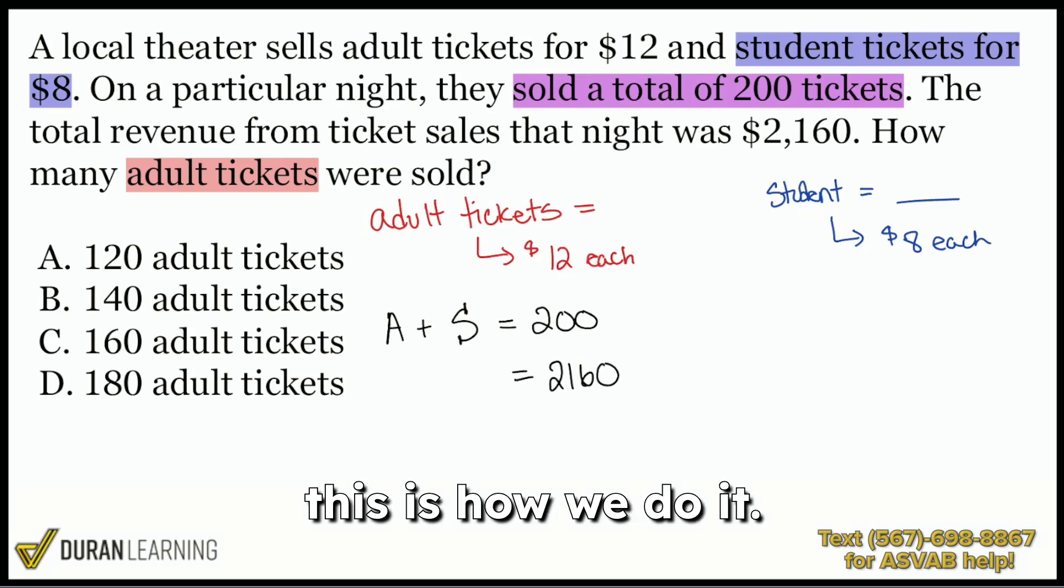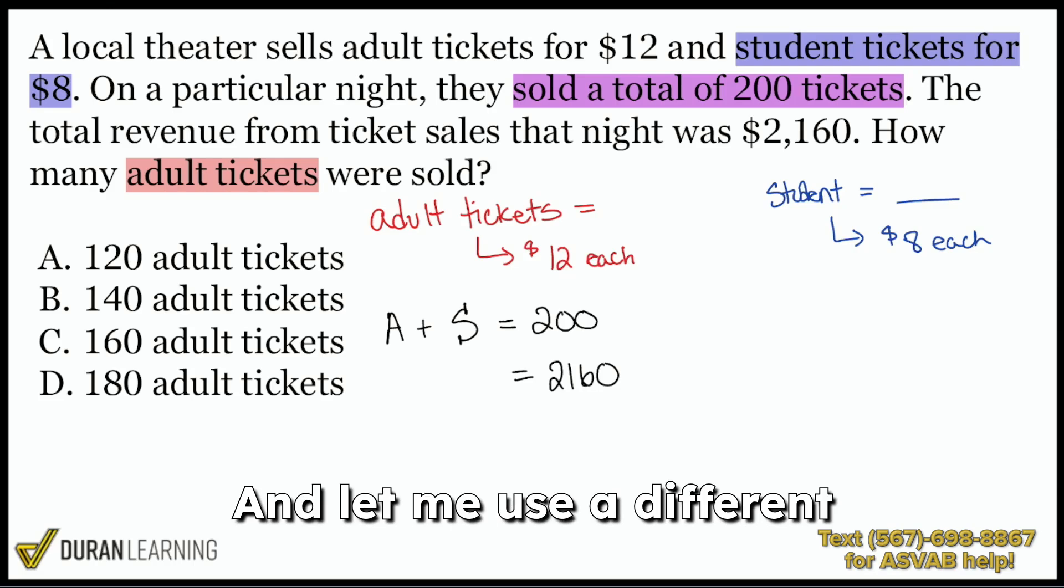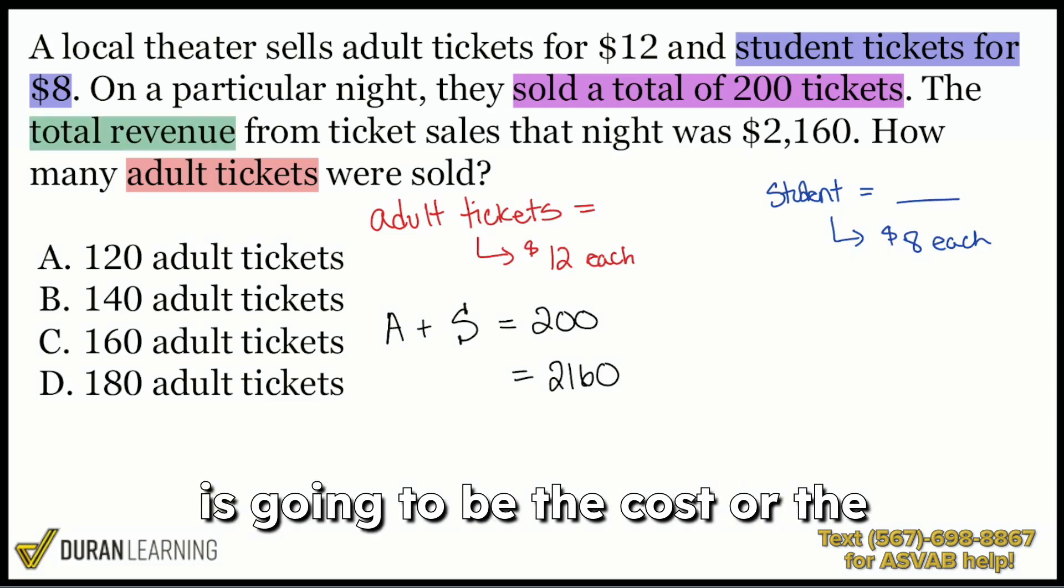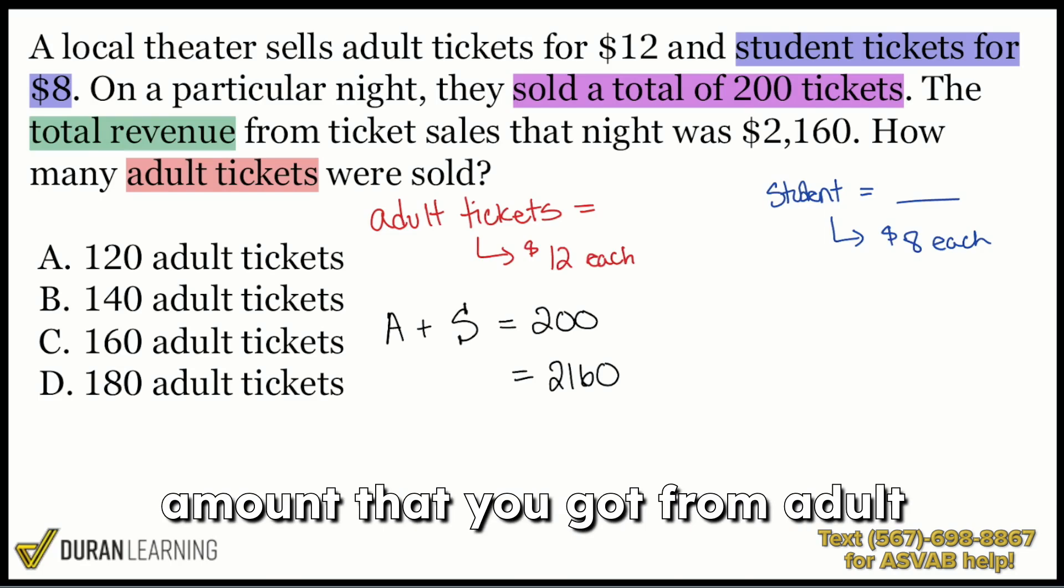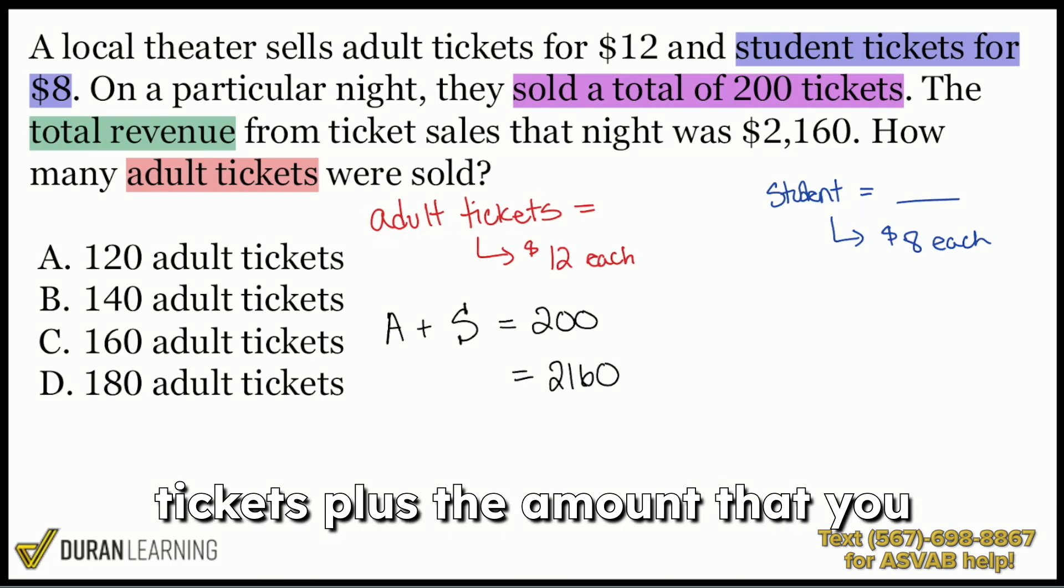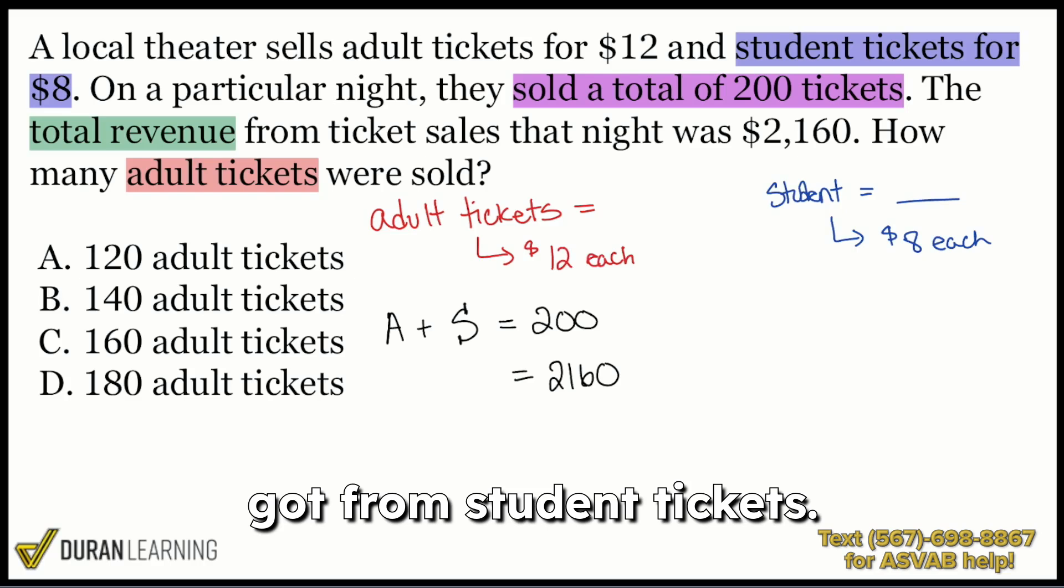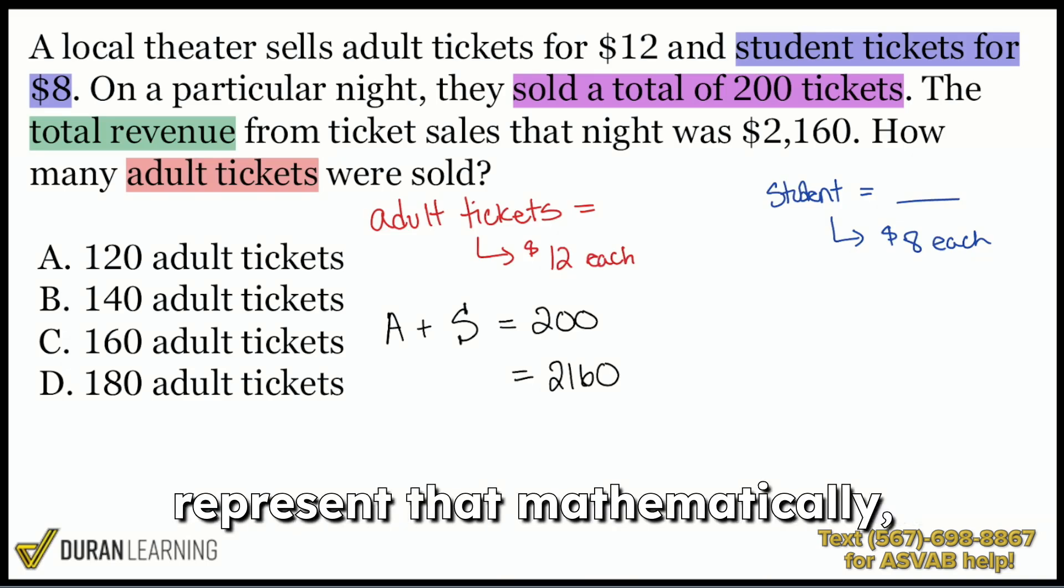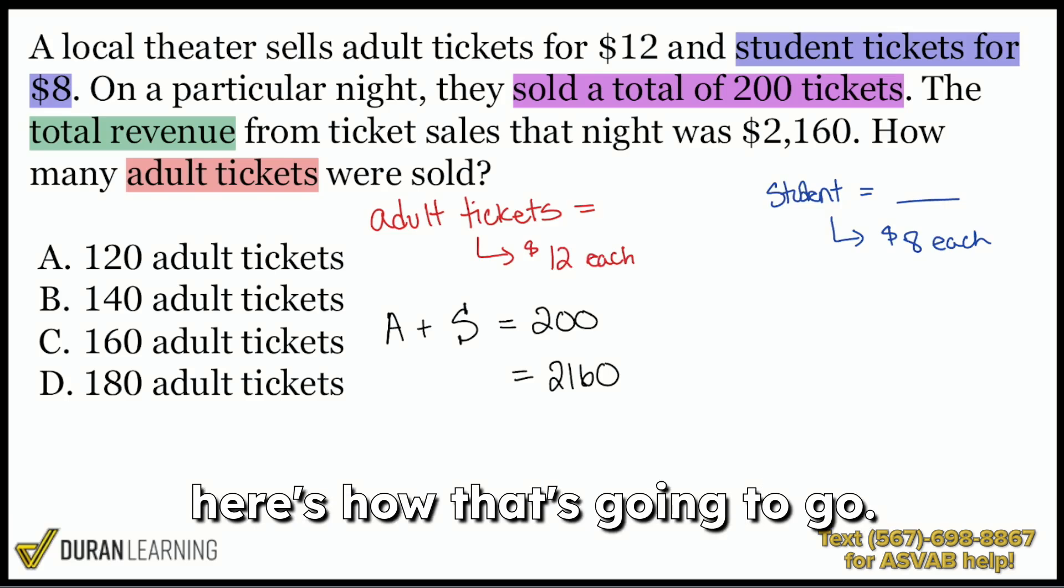Well, this is how we do it. We understand that total revenue is going to be the cost or the amount that you got from adult tickets plus the amount that you got from student tickets. Add that together, and you do get the 2,160. So to go ahead and show that and represent that mathematically, here's how that's going to go.